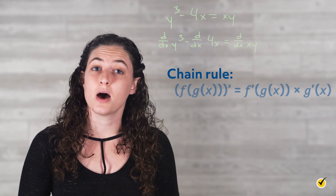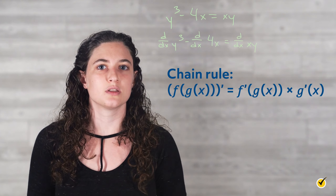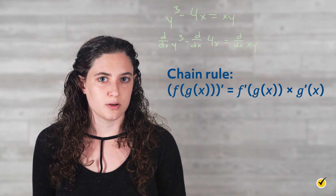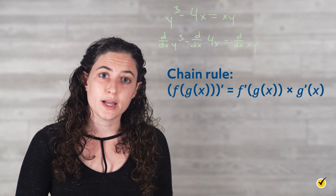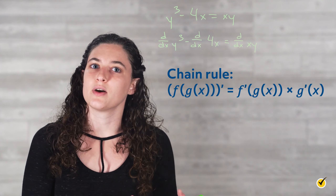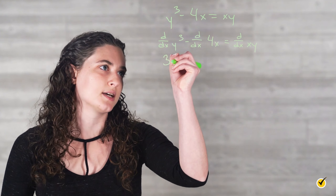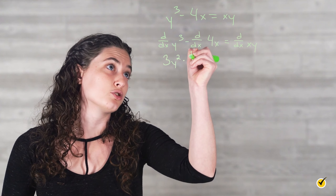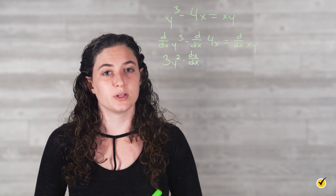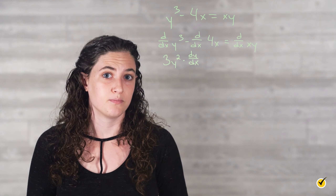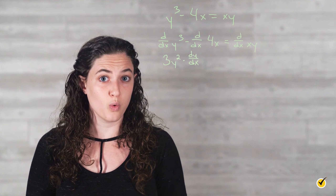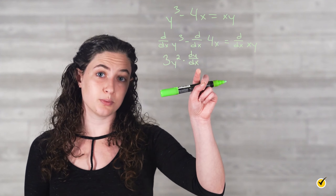Remember, the chain rule says that the derivative of a composite function f of g of x is equal to the derivative of the outside function with the inside function unchanged, times the derivative of the inside function. So in this problem, the derivative of y cubed with respect to x is equal to the derivative of the outer cube function, 3y squared, times the derivative of the inner function y. So we'll write that as 3y squared times dy over dx. Any time you have to take the derivative of a term involving y to some power other than 1, you'll need to use the chain rule and multiply by dy over dx.